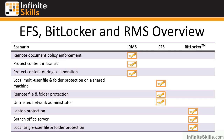Then you have Encrypted File System. EFS protects data on a particular volume, allowing multiple users to protect and access files and folders on a shared machine. It enables protection on remote files and folders and gives you protection from untrusted network administrators. EFS can also be configured with a recovery agent. However, it's only protecting the data in place — when that data is copied to another media or sent in an email, it is no longer encrypted.